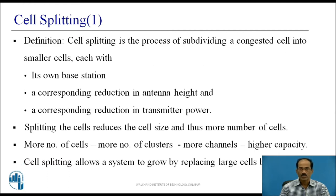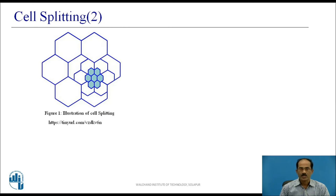Cell splitting allows a system to grow by replacing large cells with small cells. Earlier, we had large cells because demand was not high — large cells in low-density areas. However, some regions have experienced an increase in users. As a first step, we split the cells. We have done the splitting partially; certain cells are split into two or three cells.